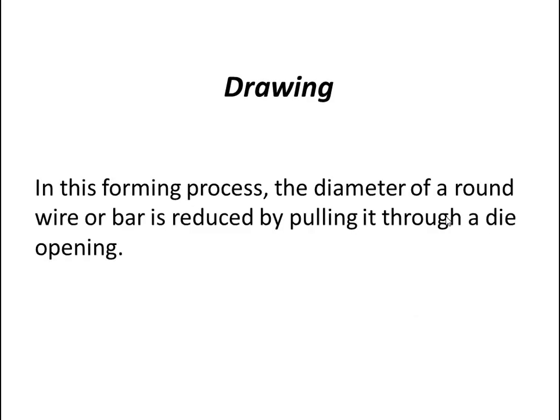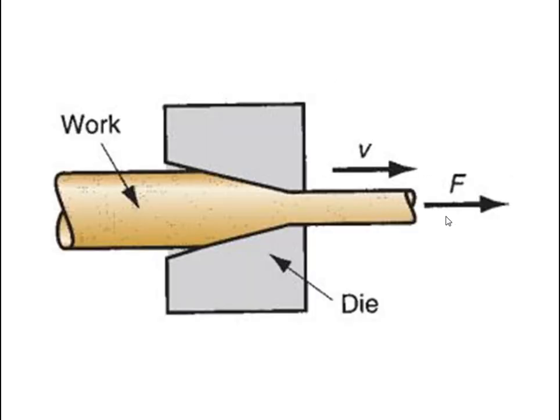The fourth process is drawing. In this forming process, the diameter of a round wire or bar is reduced by pulling it through a die opening. In the diagram, there is a die and a work part. Force is applied by pulling the object through the die in one direction, causing the cross-sectional area to become thinner.